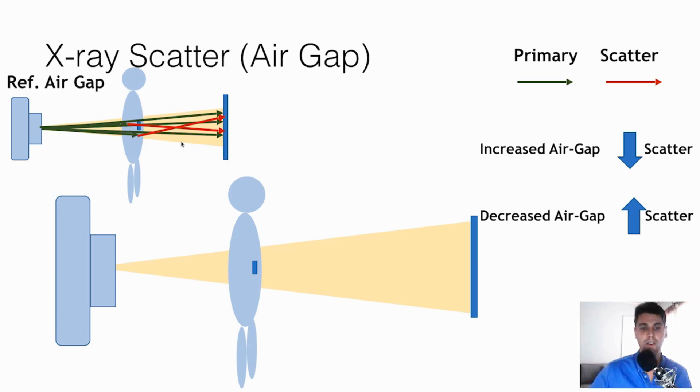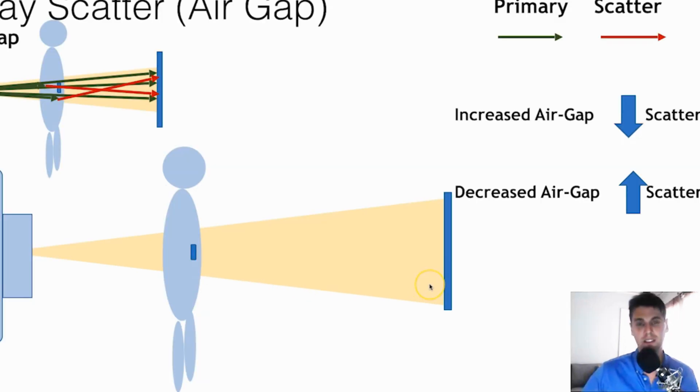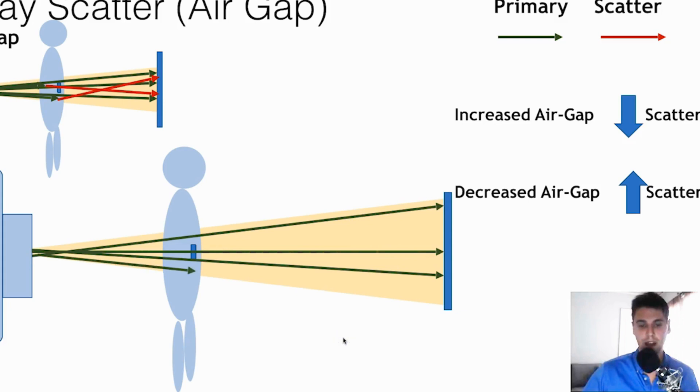So then what happens if all we change is we move the detector back further away by adding essentially what we call an air gap. The air gap means there's a bigger distance between the patient and the detector. So we're measuring the same anatomy, but we're just using more of the detector to measure that anatomy. So what's going to happen, those primary photons are going to come through in a similar manner,